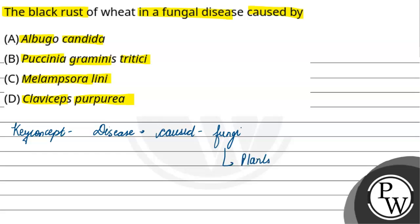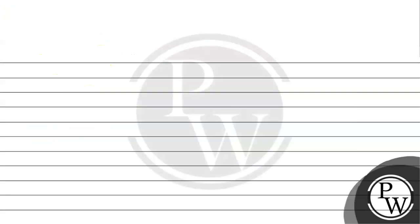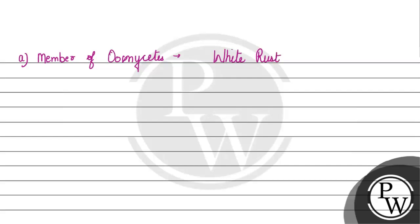First, we have Albugo candida. This is a member of the oomycetes group — it is a member of the oomycete group — and it causes white rust disease in plants.